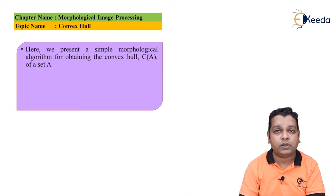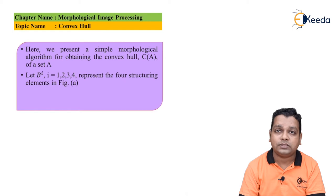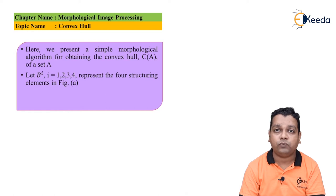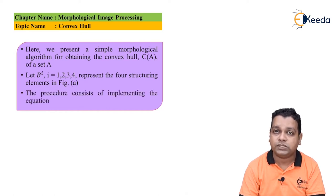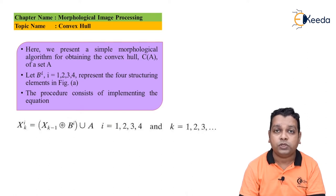Here we present a simple morphological algorithm where we obtain the convex hull, represented by C(A), for the set A as input. We have the representation B to the power i, where i takes values 1, 2, 3, and 4 to represent the four structuring elements. The procedure consists of implementing the equation X_k^i, computed as the union operation.